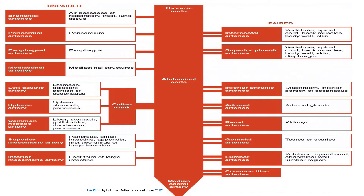Branches of the thoracic aorta in descending order are: bronchial arteries, mediastinal arteries, esophageal arteries, pericardial arteries, superior phrenic arteries, and intercostal and subcostal arteries. These are the structures found in the thoracic cavity, so these branches supply oxygen-rich blood to the structures within the thoracic cavity.